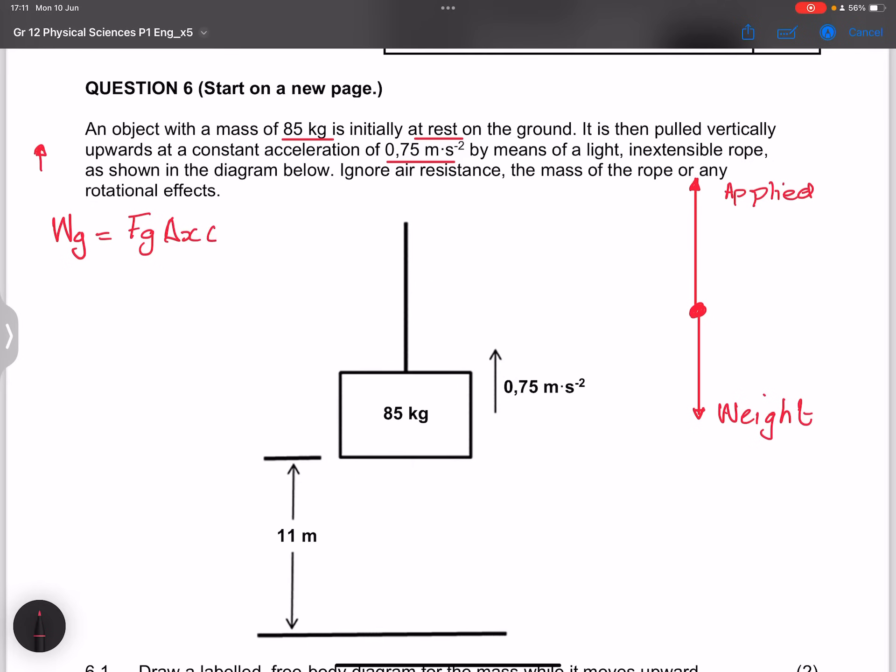So work done by gravity is going to be force of gravity times delta x times the cos of theta. Now note force of gravity is mass times gravitational acceleration, so this is going to be 85 times 9.8, the displacement is 11 meters. And now remember we said this angle is the angle between direction of motion. The motion is going upwards but where is the force? That is the force of gravity, the force in question.